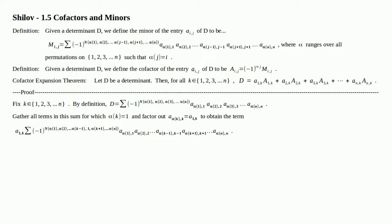But here's the proof. Fix K, or choose K, in the set 1 through N — just choose a column. By definition, D is equal to that sum — that's just the definition of a determinant. Gather all terms in this sum for which alpha of K, because you chose K, for which alpha of K is equal to 1, and factor out A sub alpha of K, which in this case, because alpha of K is 1, is actually just A sub 1K.